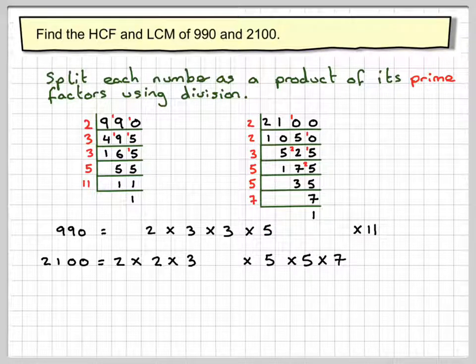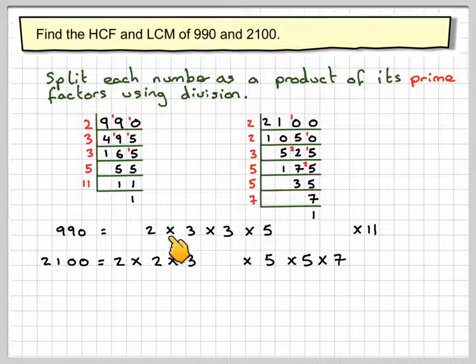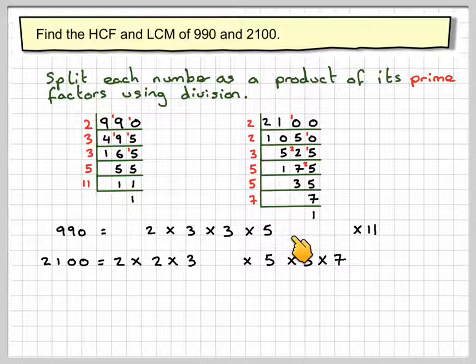Now we list 2100 as 2 times 2 times 3 times 5 times 5 times 7. This is 2 times 3 times 3 times 5 times 11 for 990. Leaving spaces is quite useful. Sometimes people write these as 3 squared, but in finding the LCM and HCF, it's probably better to write them all out like that.